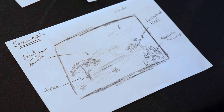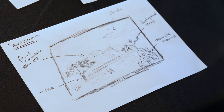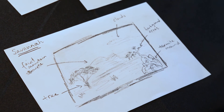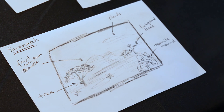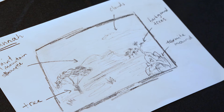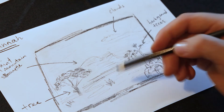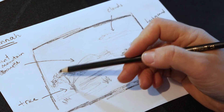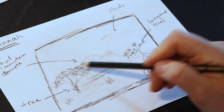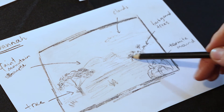I did some research and found that an elephant's environment — its habitat — is called the savannah in Africa. The savannah has lots of long grass and beautiful sparse trees. Think Lion King.